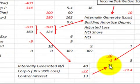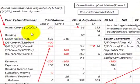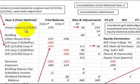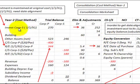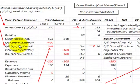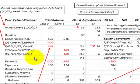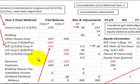In summary, when using the cost method, the investment account in the subsidiary is maintained at its original cost. We must make an equity conversion to align the investment account with the equity accounts for the parent and subsidiary. Also remember: under the cost method, only dividends declared by the subsidiary are recorded as income — the parent's percent of net income from the subsidiary is not recorded.